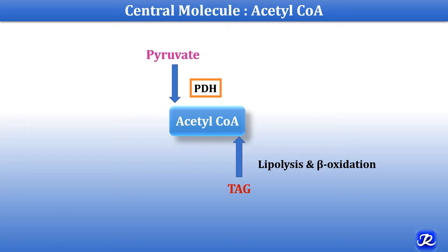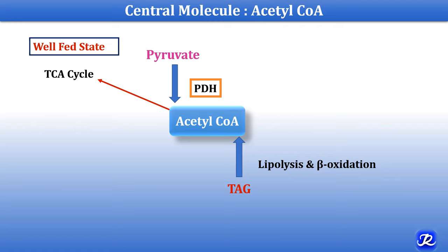Now what is the fate of this acetyl-CoA in the well-fed condition? The acetyl-CoA undergoes the TCA cycle. Reducing equivalents are generated in the TCA cycle which undergo the electron transport chain to generate the energy currency of the cell, that is ATP.